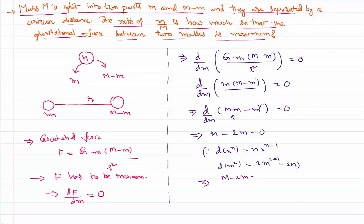This implies capital M minus 2m equals zero, so capital M equals 2m, or small m equals capital M by 2. This simply tells us that the mass has to be distributed into two equal parts. Therefore the ratio of small m to capital M is one half, or capital M to small m is 2. This is how we distribute the mass so that the gravitational force between them, when separated by a certain distance, will be maximum. Thank you for watching, keep coming back for more video lessons.